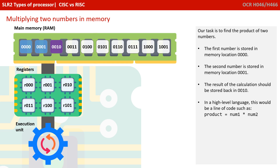Our task is to find the product of two numbers. The first number is stored in memory location 0000, the second in 0001, and the result should be stored back in memory location 0010. In a high level language this would be a line of code something like: product equals num1 times num2, where each of those words are variables or locations.